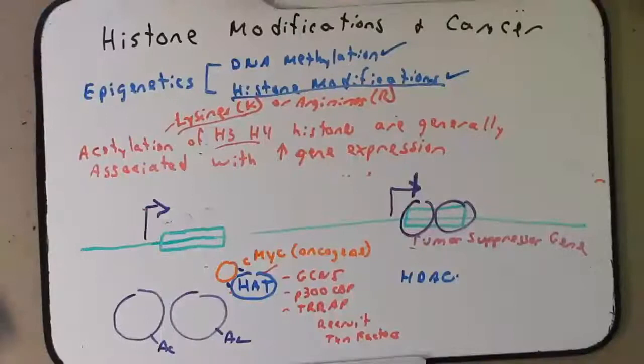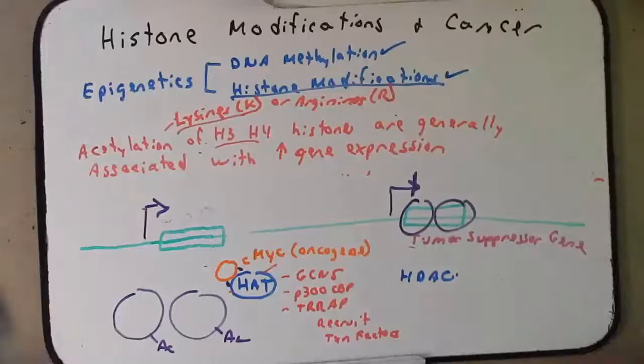So c-MYC brings over this whole complex — with the HAT that helps keep histones acetylated, and other modifying proteins as well — so together all of these proteins will help keep this oncogene turned on to drive the cell cycle forward even in times when it shouldn't be. That's all I want to say right now about histone modifications and cancer, and that ends this podcast. If you have any questions please let me know, otherwise I'll see you in class.